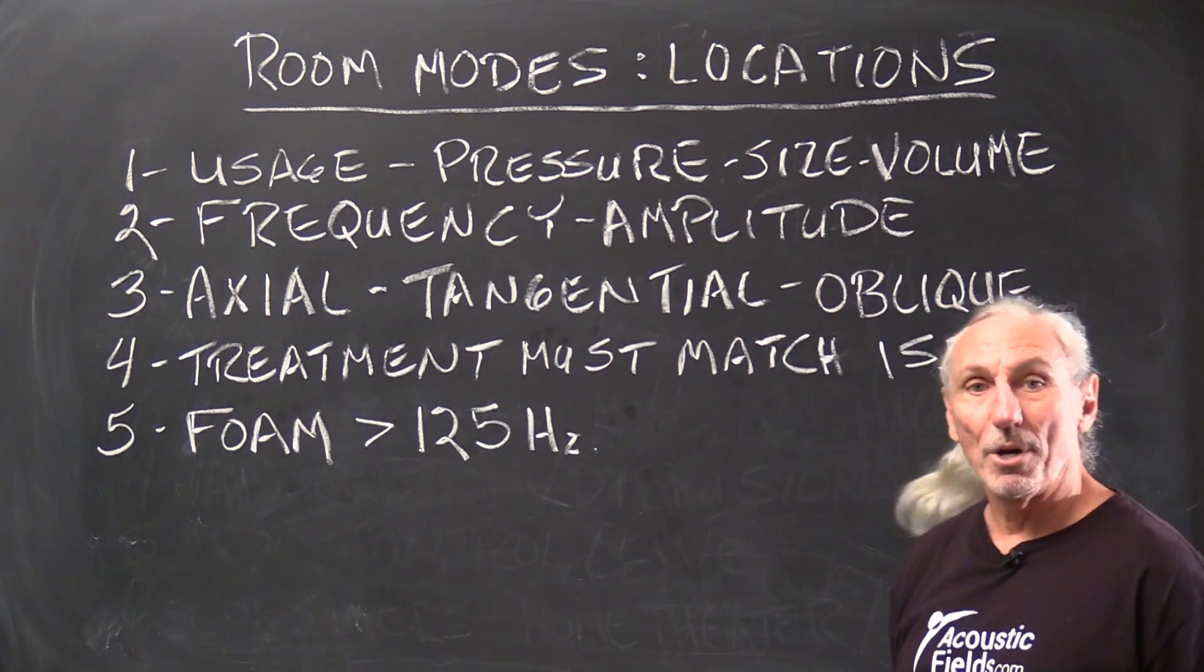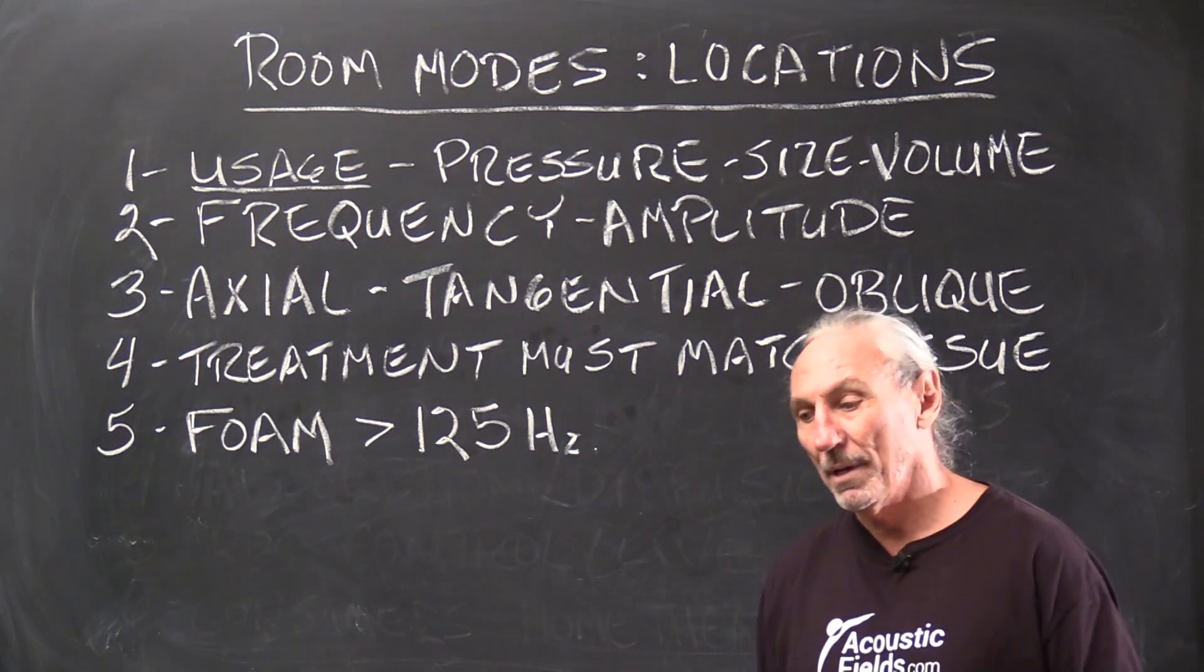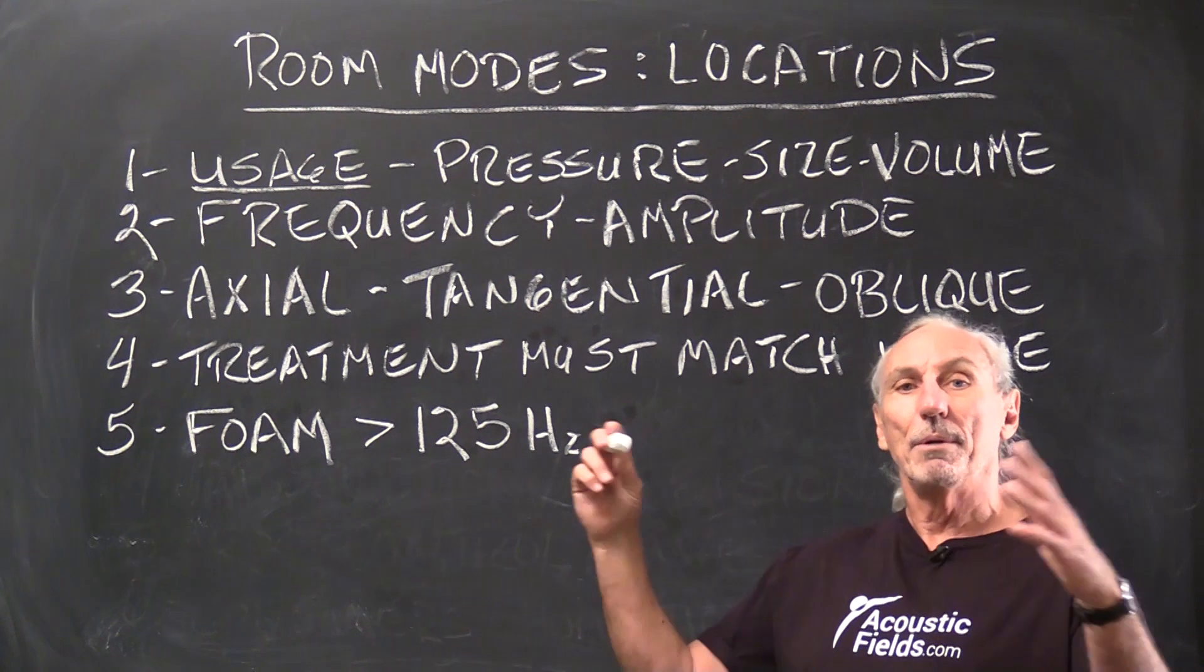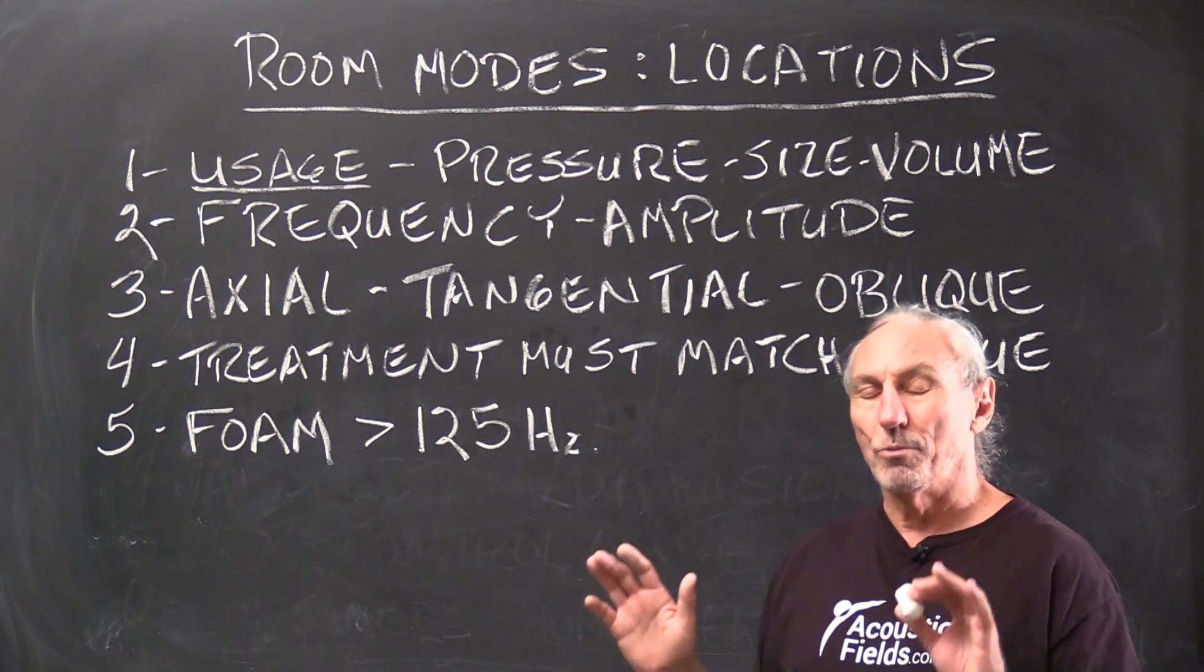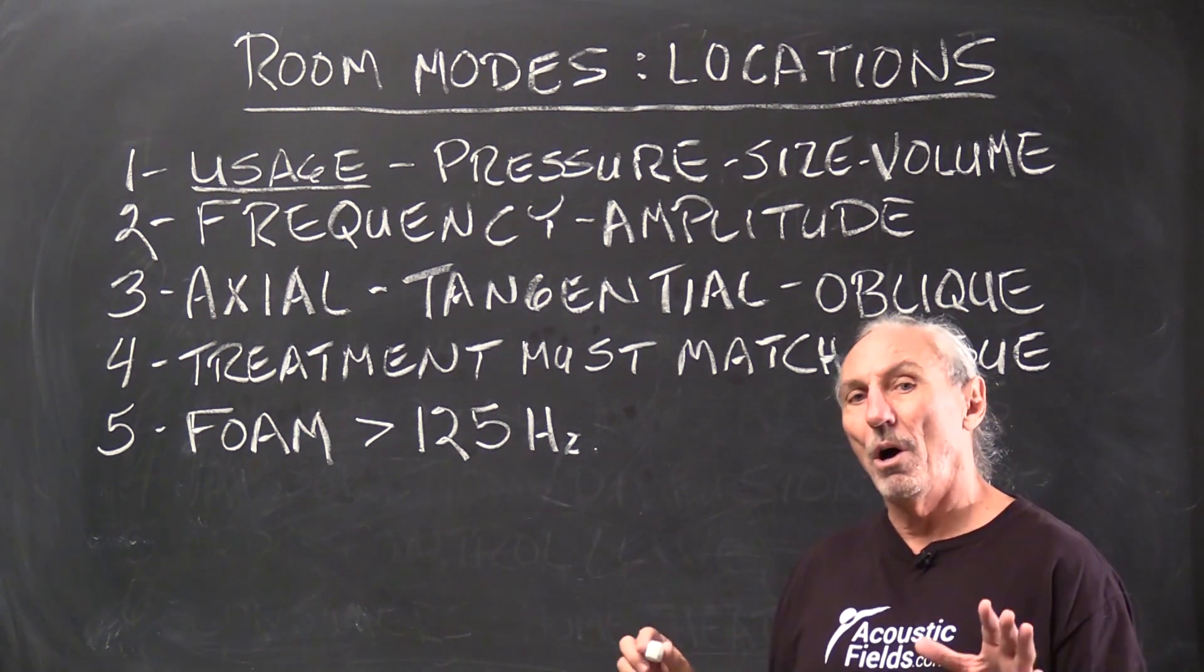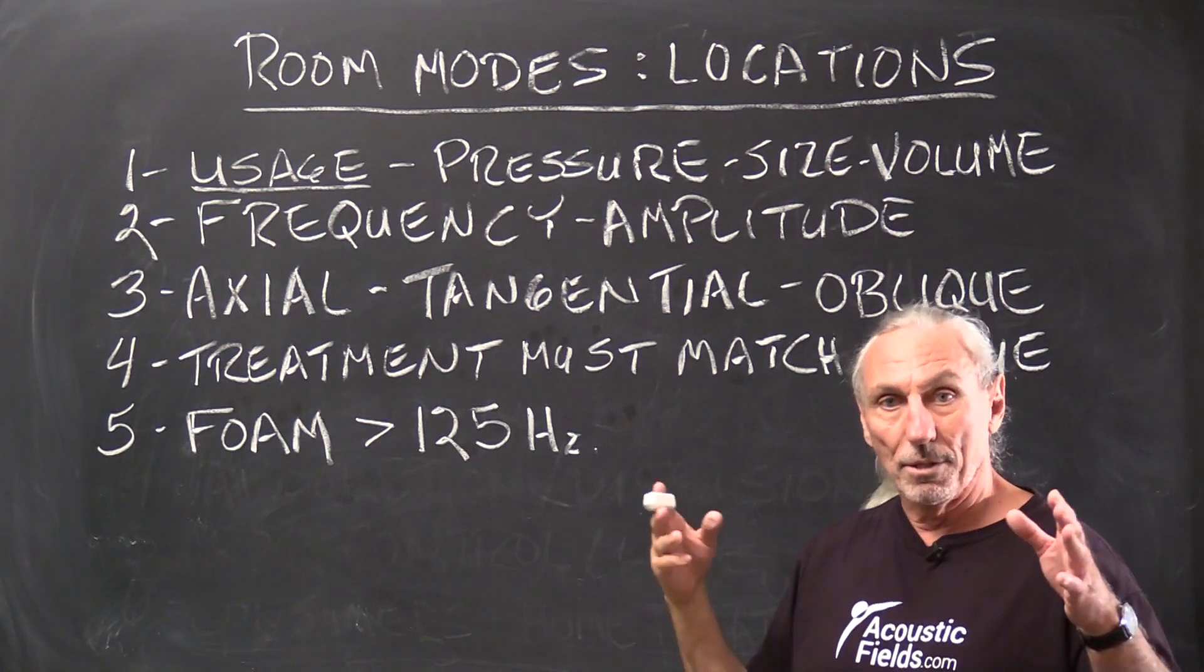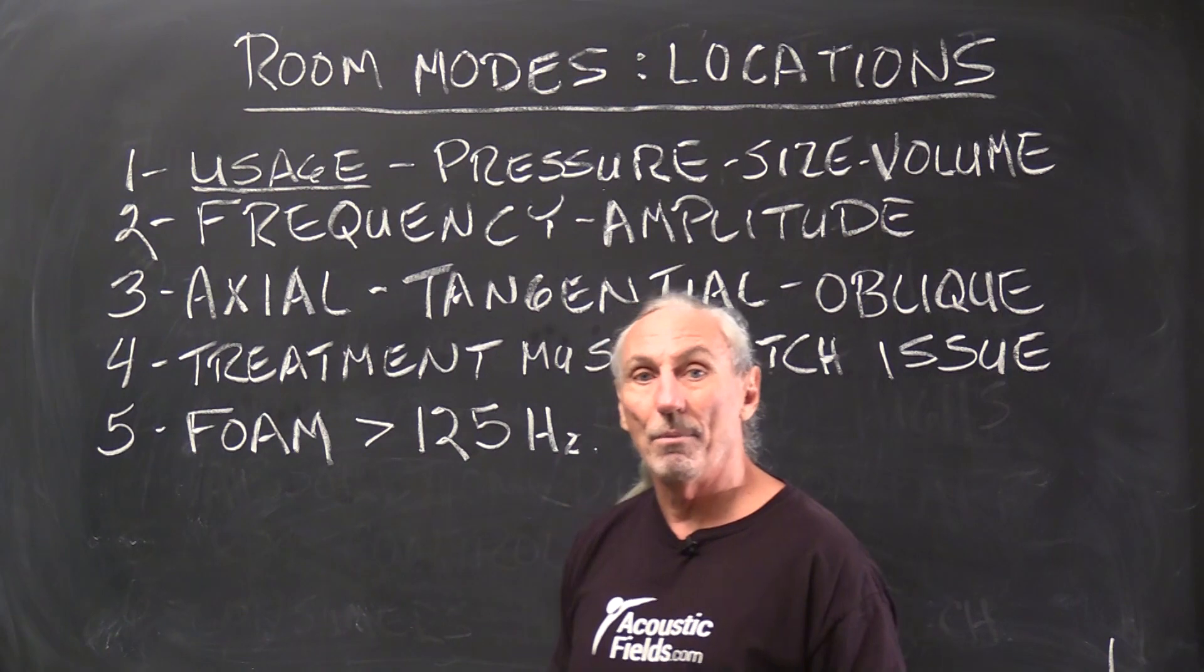So today we're going to talk about locations and we know that depending on what we're doing in the room, the problems can be minimal or they can be exaggerated. It's always dependent on what you're doing in the room. If you're in a big auditorium and you're having a conversation with somebody, just two people, it's way different than if there's 200 people and a band playing on stage. So it's all about what you're doing in the room, the amount of energy that you're putting in the room, the size and the volume of the room. Because the room's size and volume tells you how much pressure it will handle and that pressure tells you what you can do in the room.